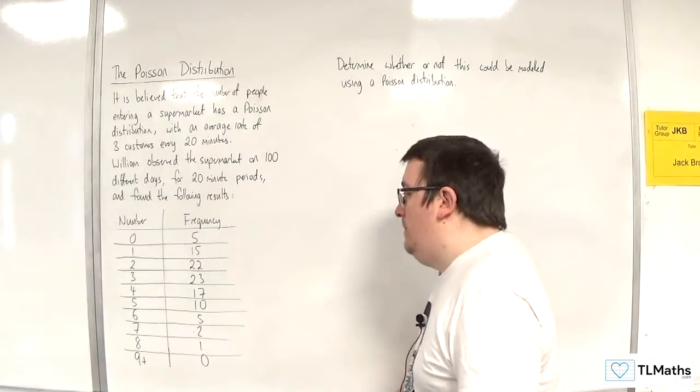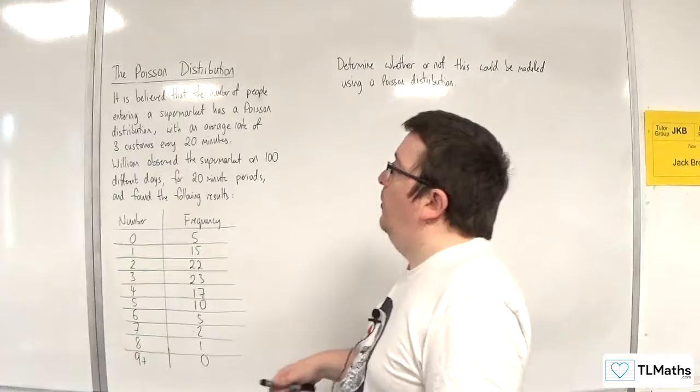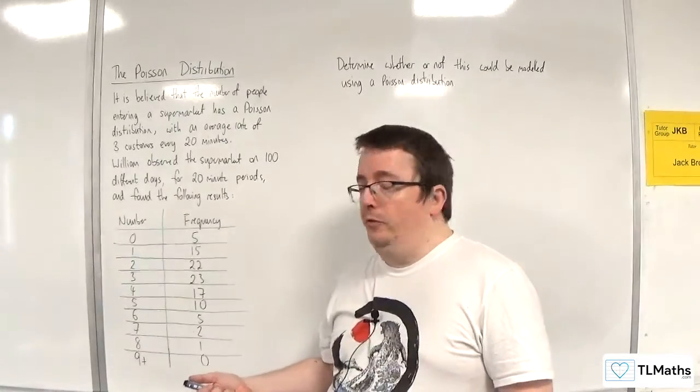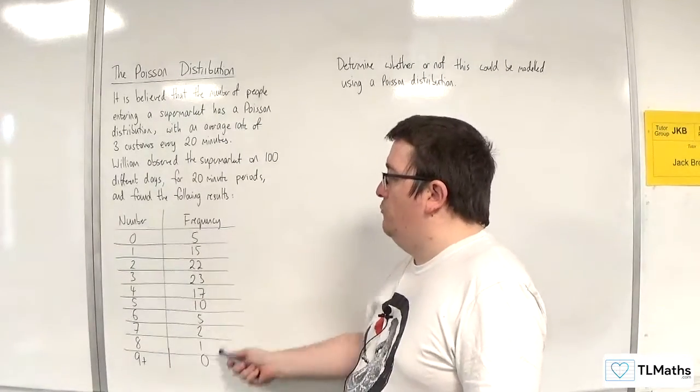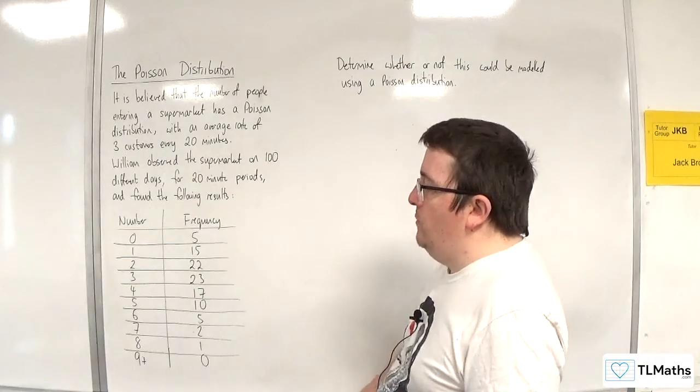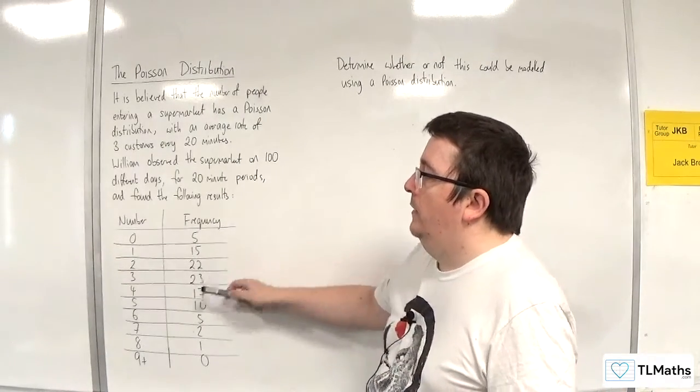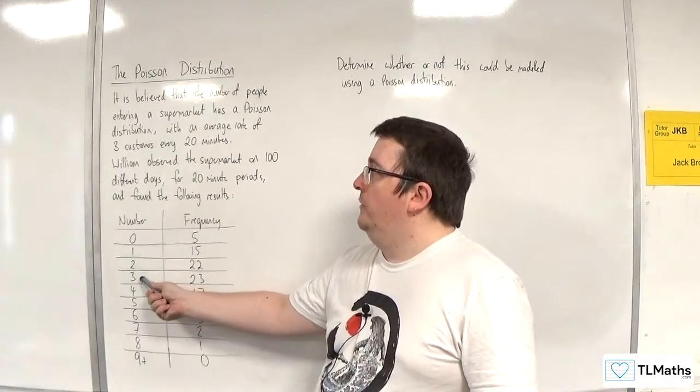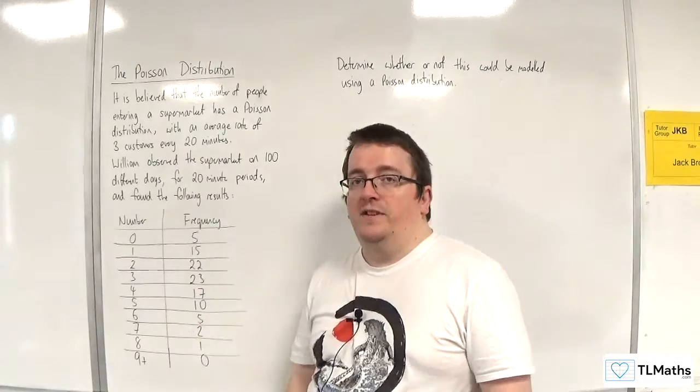William observed the supermarket on 100 different days for 20 minute periods and found the following results. So what this table is showing you is that there were 100 trips to the supermarket, so the total frequency should be 100. And on 23 of those trips, 3 people were observed coming into the supermarket in a 20 minute period.